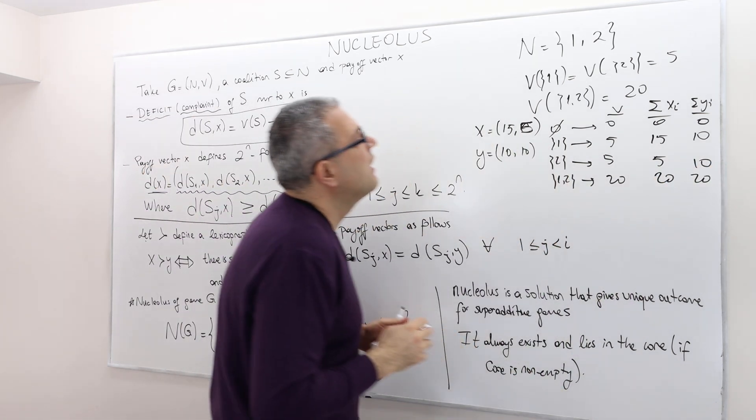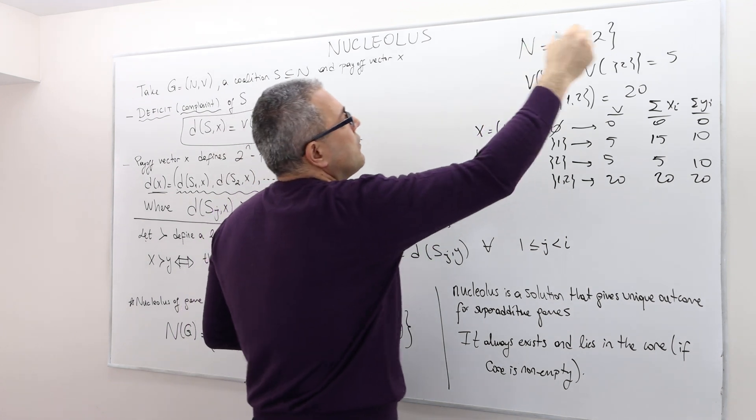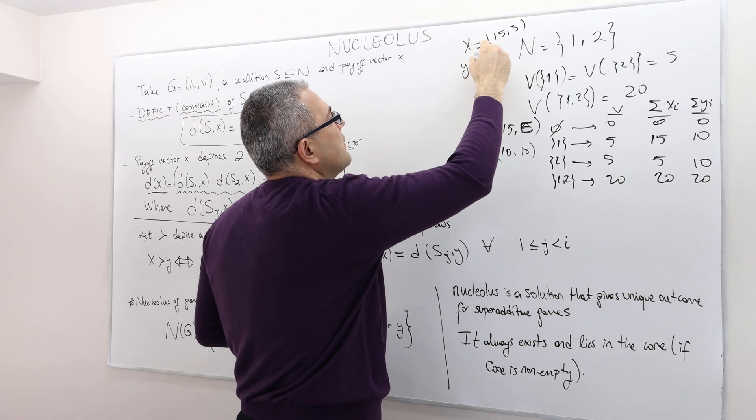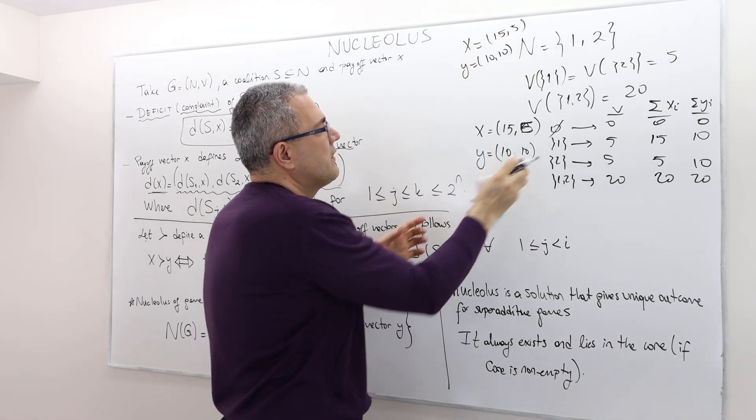Player 2's take here, under x is 5, under y is 10. And then what is the takeoff coalition 1-2? It's 20 in both. Let me put x here. It is 15, 5. And y here, it's 10, 10.